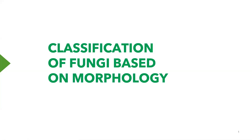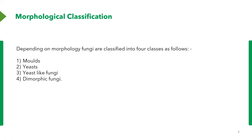An important way that fungi can be classified is based on their structure or shape, and that is the morphological classification. There are four main classifications that can arise from this: moulds, yeasts, yeast-like fungi, and dimorphic fungi. We'll take time to look at each one of them and understand them a bit more.